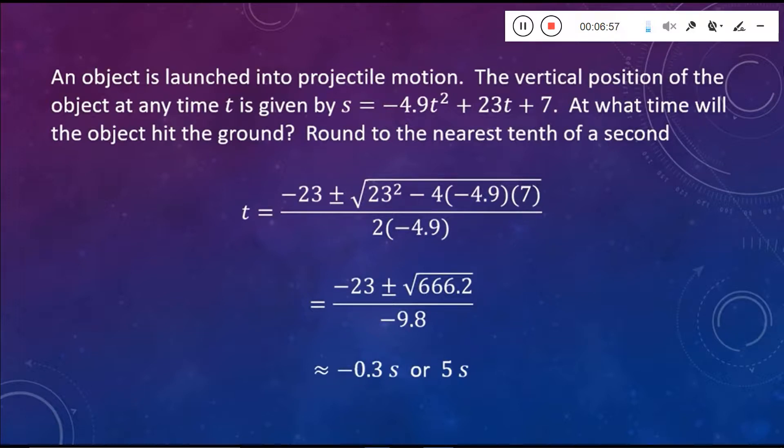Now, obviously, only one of these answers makes sense. We can't have time being negative. We can't go back in time. Trust me. If I could, I would have and fixed some stuff. But so our answer of negative 0.3 seconds, we have to cross that out. We can't have that guy. That's not a realistic answer. So therefore, our one answer of when approximately this object is going to hit the ground is going to be our answer of five seconds.